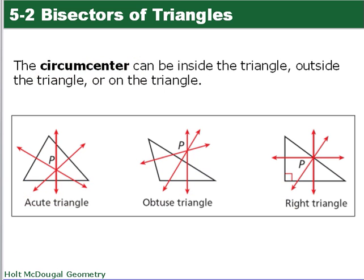For a circumcenter, it can be in one of three places relative to the triangle. It can be inside the triangle for an acute triangle. For an obtuse triangle, it can be on the outside. And for a right triangle, it will actually be on the triangle itself.